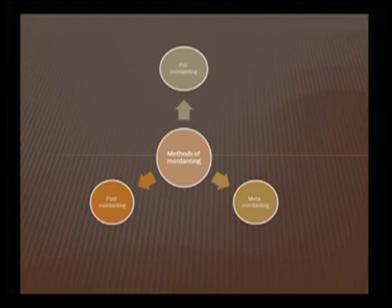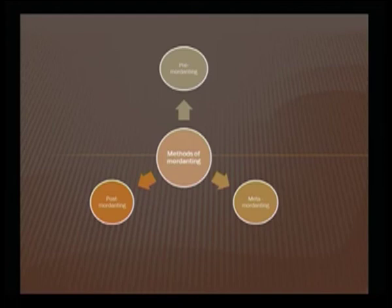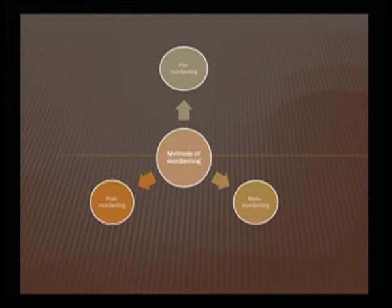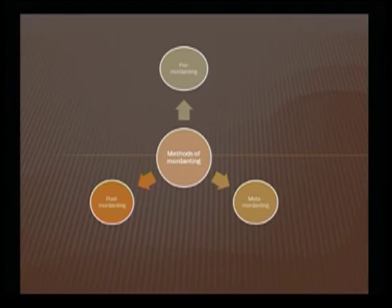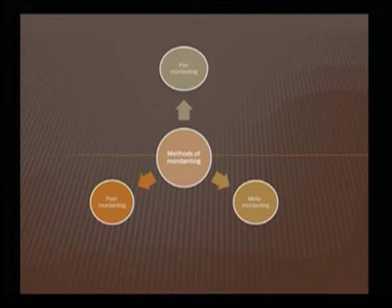Now we come to the various possibilities of mordanting, which are repeated because they are only valid for natural dyeing. We can either do pre-mordanting of the fabric, or simultaneous mordanting where dyeing and mordanting are done at the same time, or we can have a post-mordanting step. These are the three mordanting approaches applicable to natural dyes.